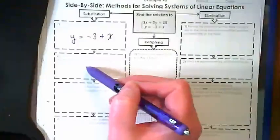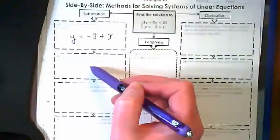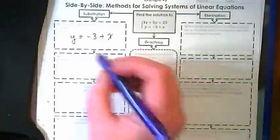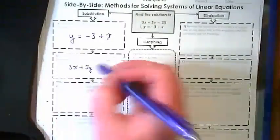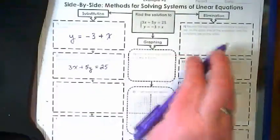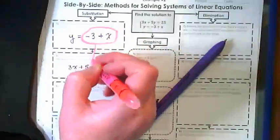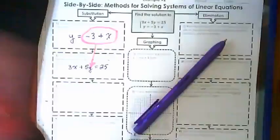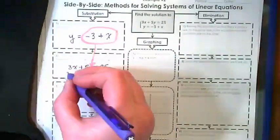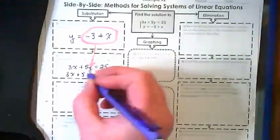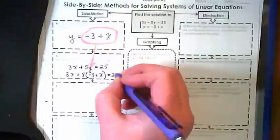Step two, using the other equation, substitute in the expression that you just found for the isolated variable in step one. So we're going to take the second equation, 3x plus 5y equals 25, and we are going to take this and substitute it in for the y. So we're going to rewrite this as 3x plus 5 times negative 3 plus x equals 25.